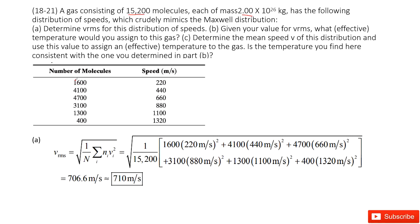It tells you for 1600 molecules, the speed is 220 meters per second. And for 4100 molecules, the speed is 440 meters per second. So this one. Now by definition, we can get the v_rms very easily.